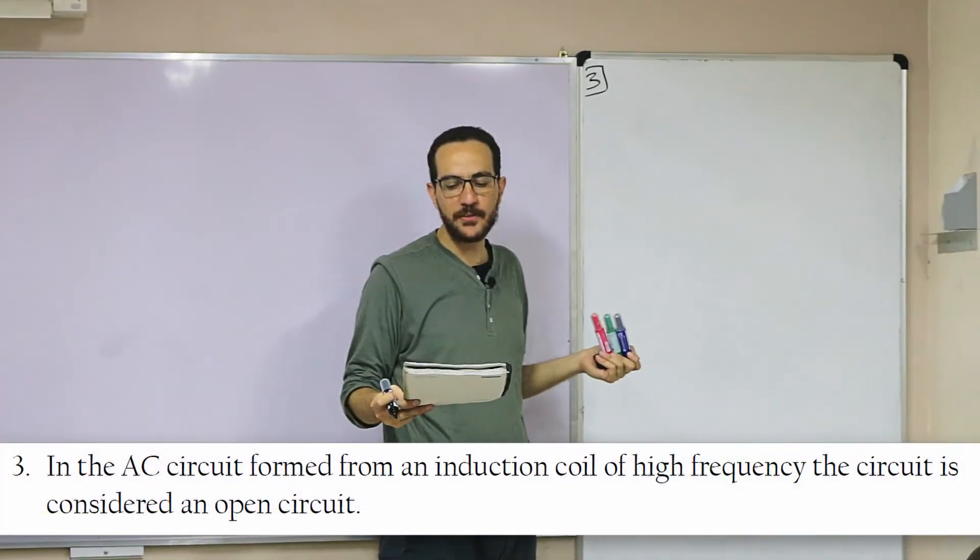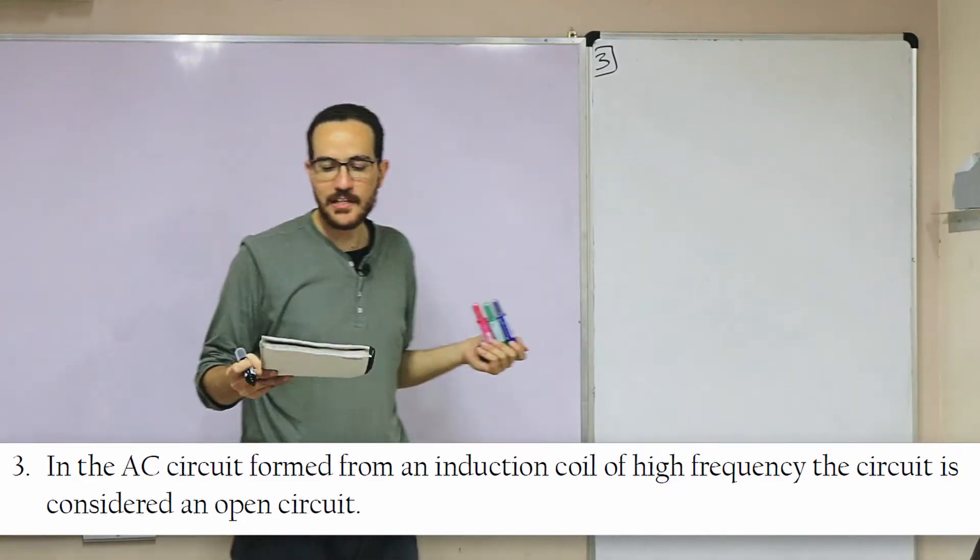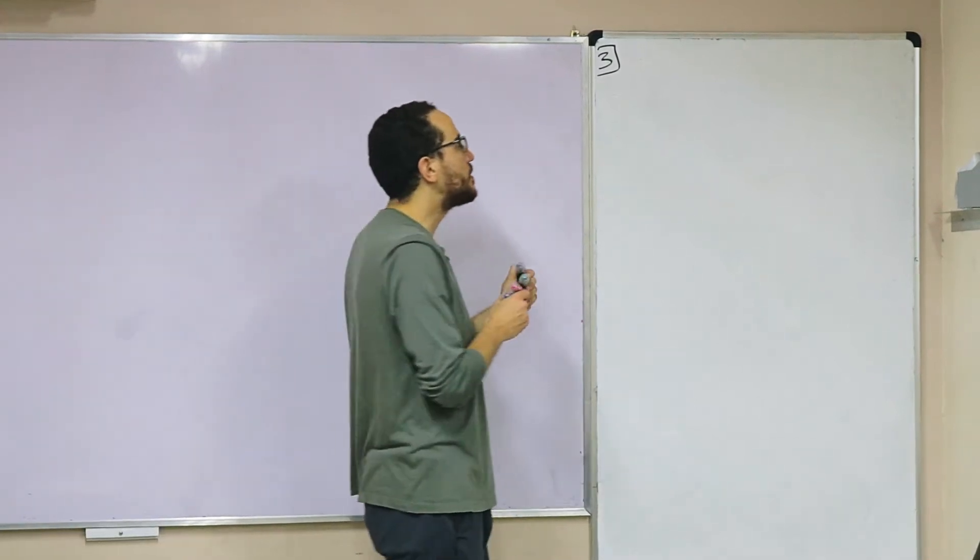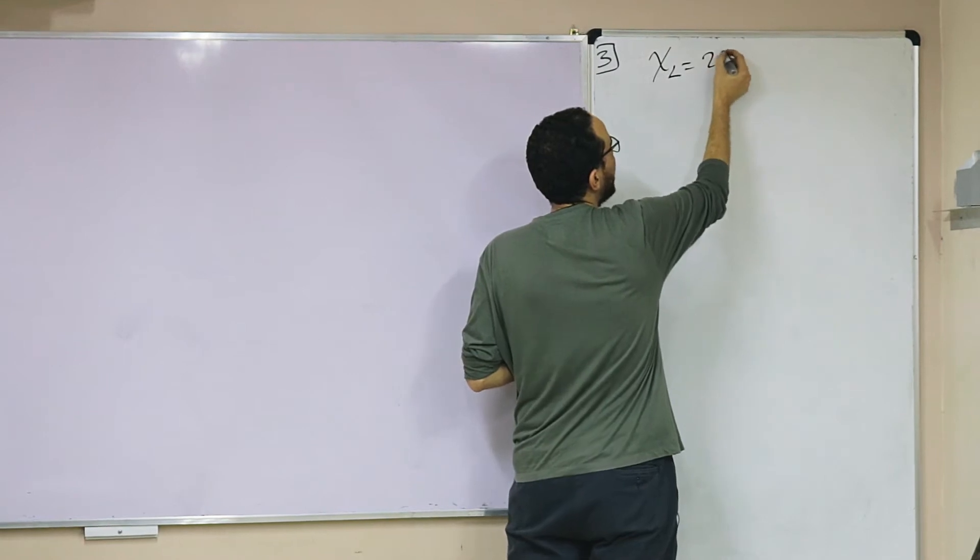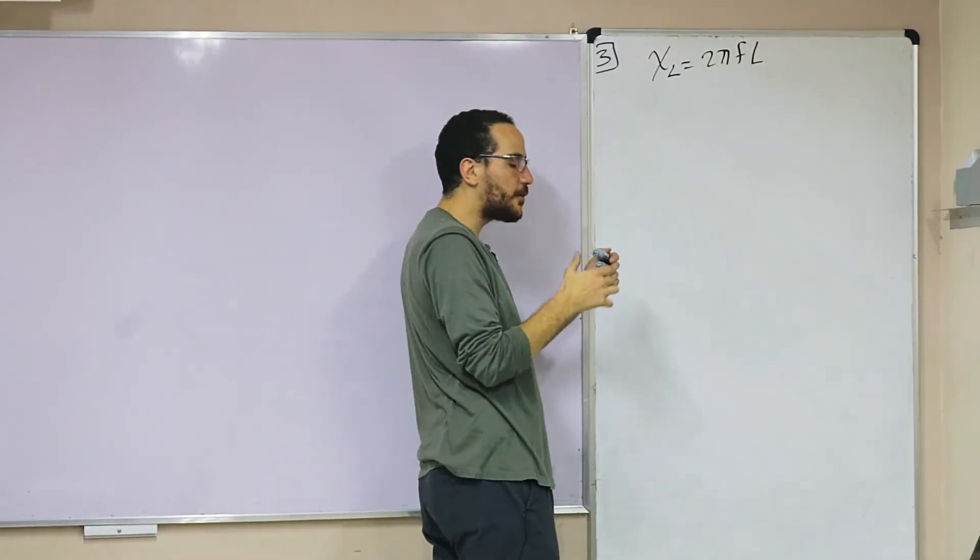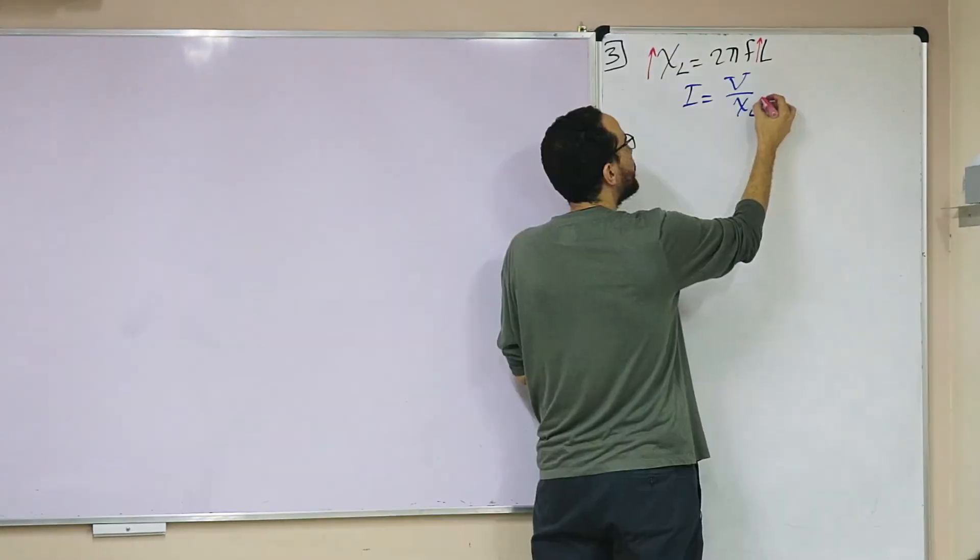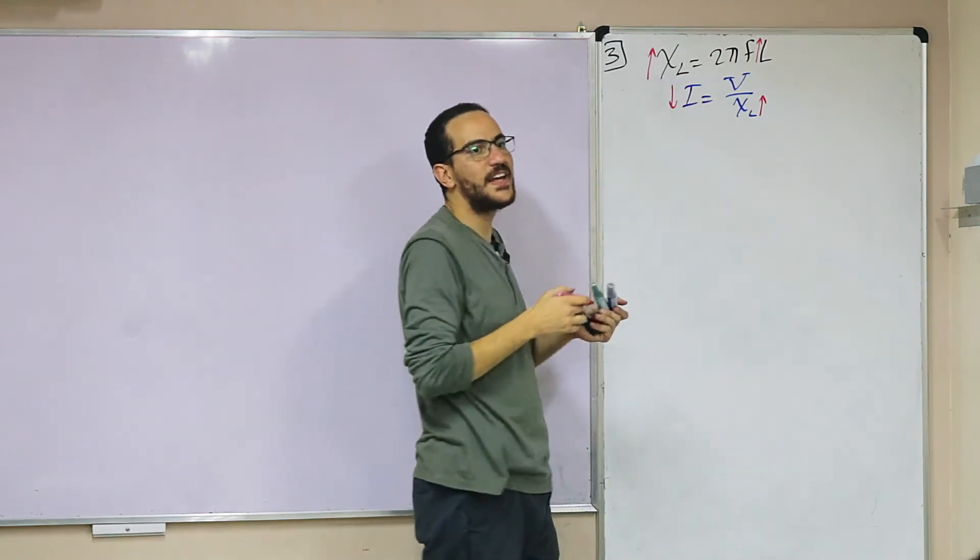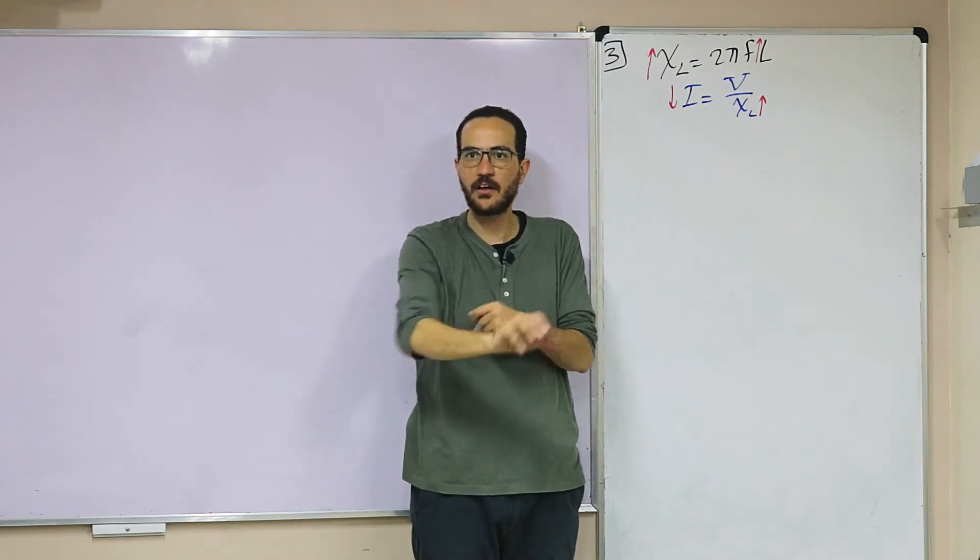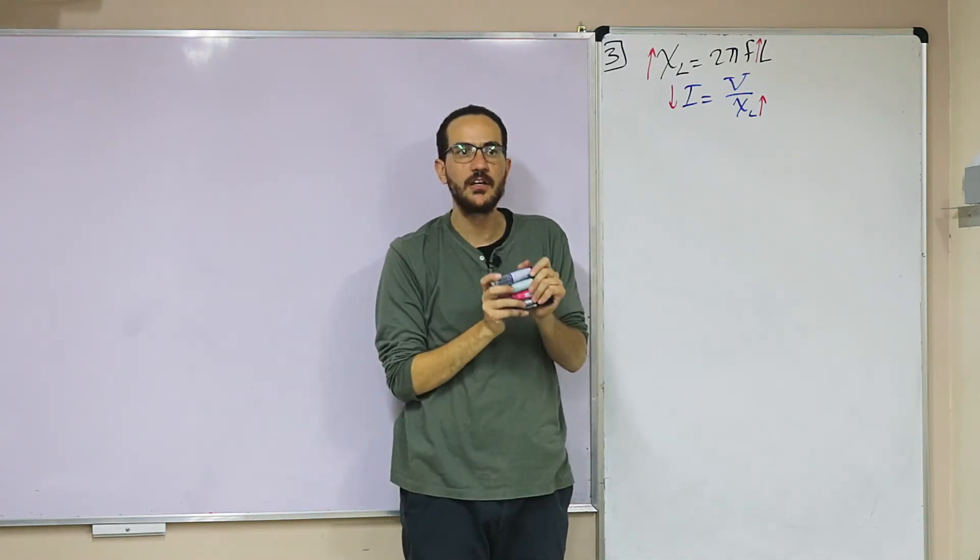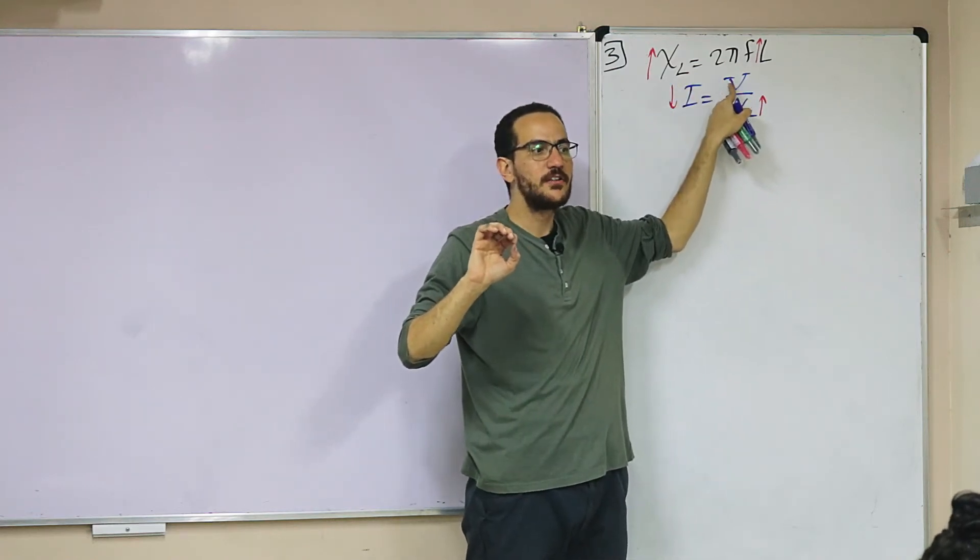Three: In the AC circuit format for an induction coil of high frequency, the circuit is considered open circuit. There is XL which is 2πFL. At very high frequency, XL, which is inductive reactance, will be very high, so current will be very low. When current is very low, we consider the circuit open because the inductive reactance is directly proportional to the frequency.